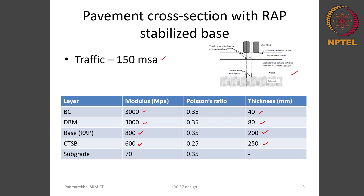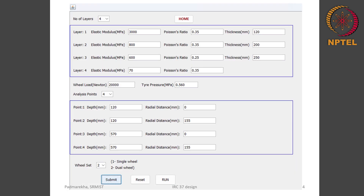We will use an effective modulus of the sub grade to be 70 mega Pascal. The Poisson's ratio value for the cement treated sub base alone is taken as 0.25, and for all other layers it is taken as 0.35. Now when you give this as an input in the IIT Wave software, the screen looks something like this. Although it is a 5-layer structure, we will club BC and DBM as a single layer, giving a total of 4 layers.